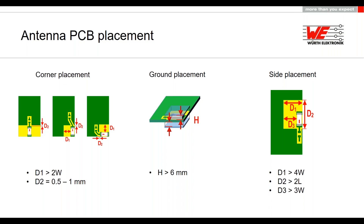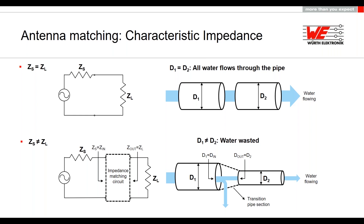Now we will talk about antenna matching, but first we need to review the important concept of characteristic impedance. Impedance is the amount of opposition faced by the RF signal. For optimal performance, source impedance should equal load impedance — the characteristic impedance. This can be explained with a water pipe analogy: for smooth water flow, the diameter of two pipes should be equal. If the diameter changes, a transition pipe is needed to match both pipes. This is the function of a matching circuit.